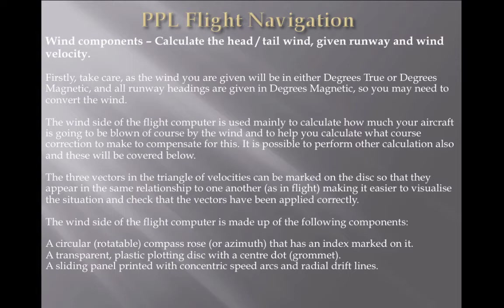Take care, as the wind you are given will be in either degrees true or degrees magnetic. It would be very easy if the exam said 'degrees true' or 'degrees magnetic,' but they don't. They will give you clues to work it out. Understanding that all runway headings are given in degrees magnetic, you will need to convert the wind. You may get an exam question that says the runway heading is degrees something — that should be a warning bell to convert into degrees true, so that all corresponding results are in degrees true.